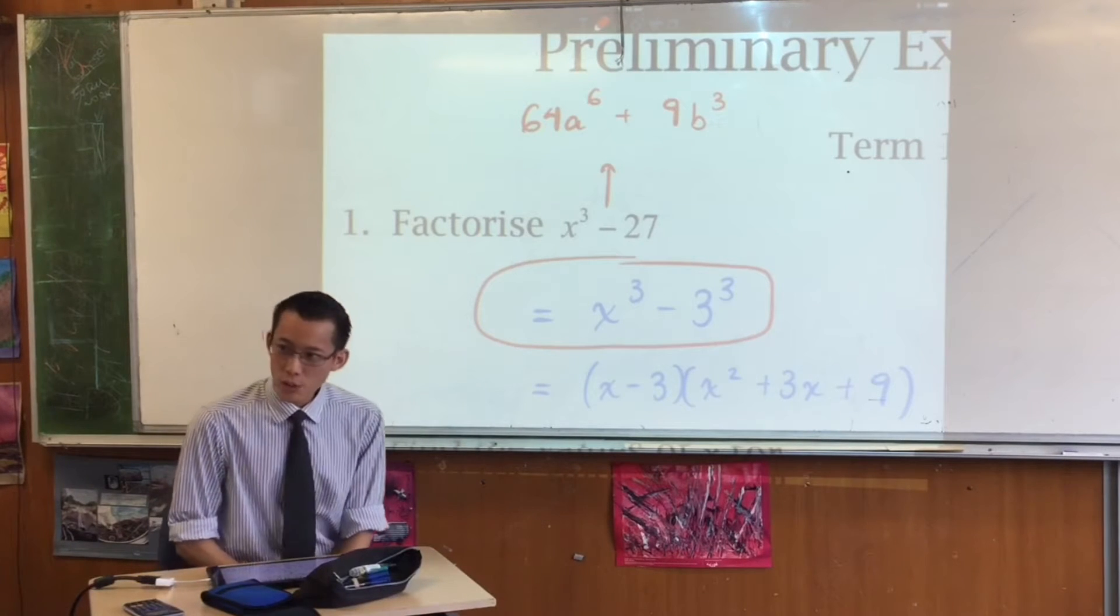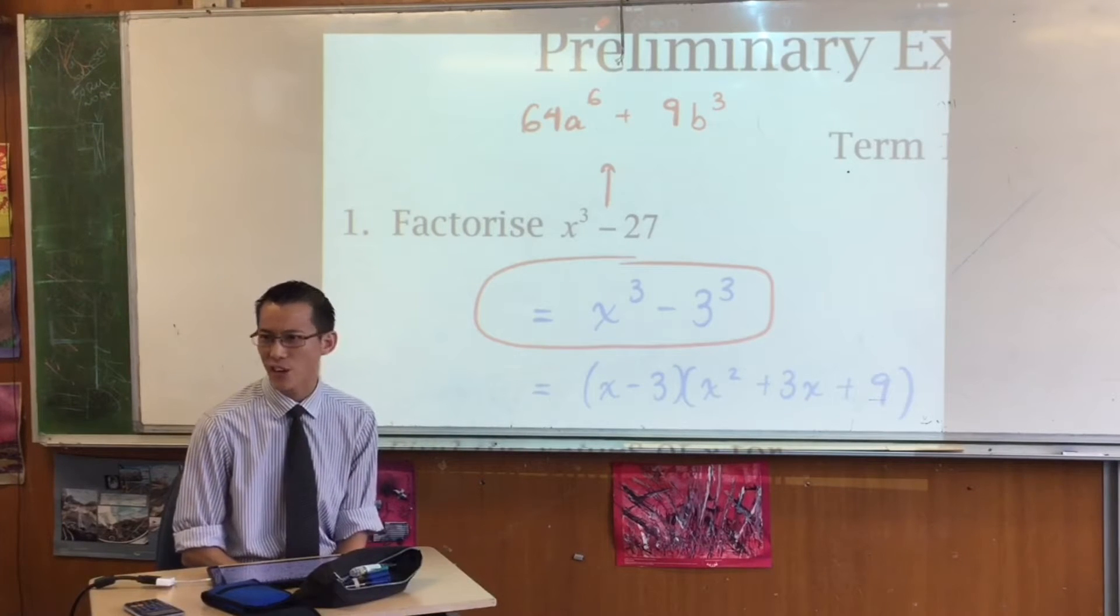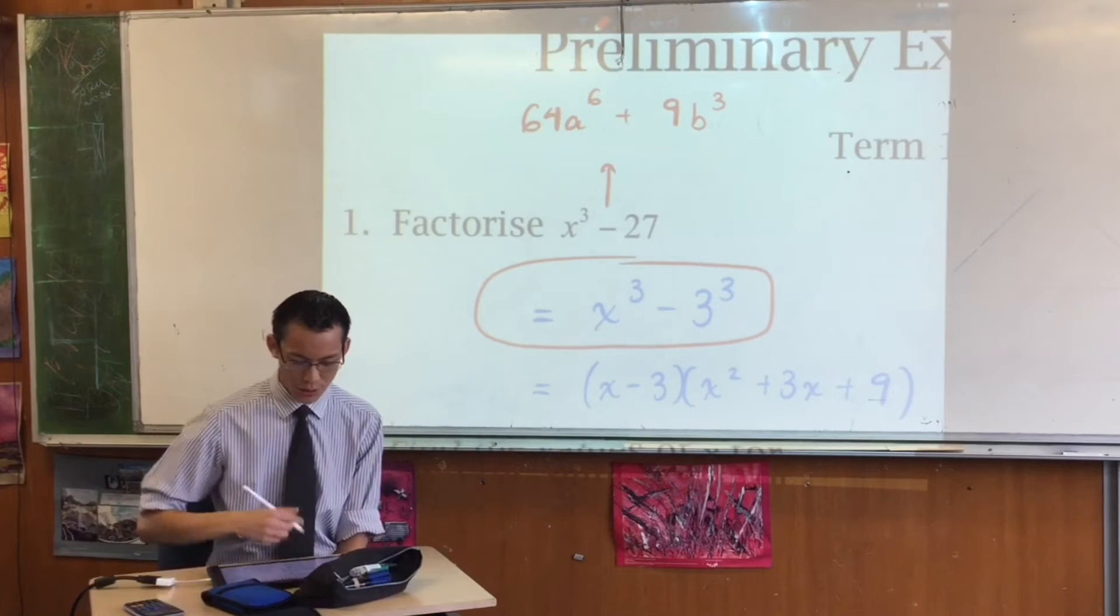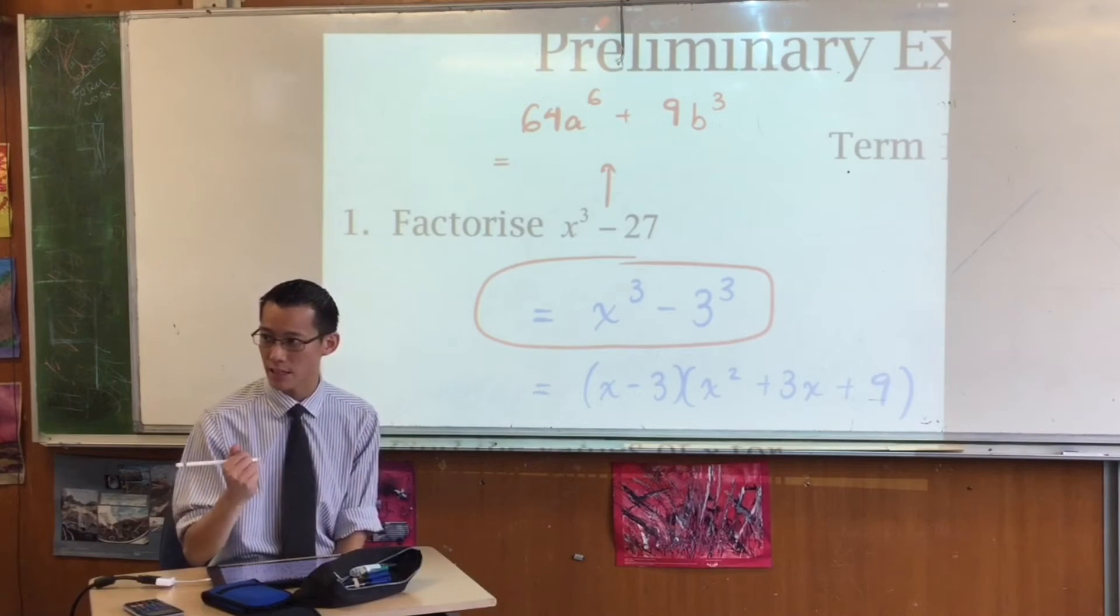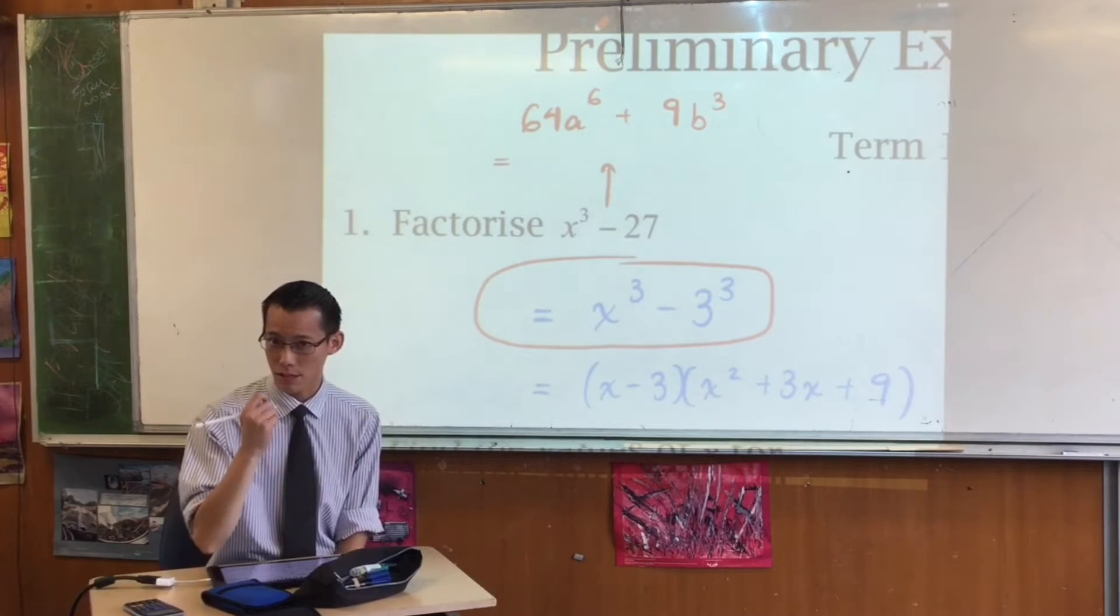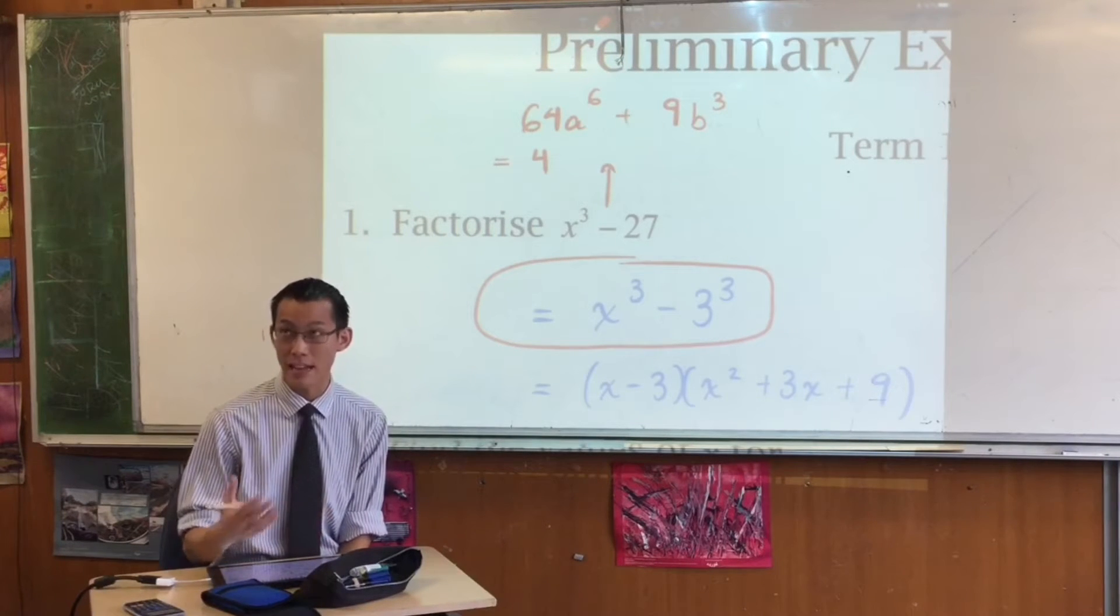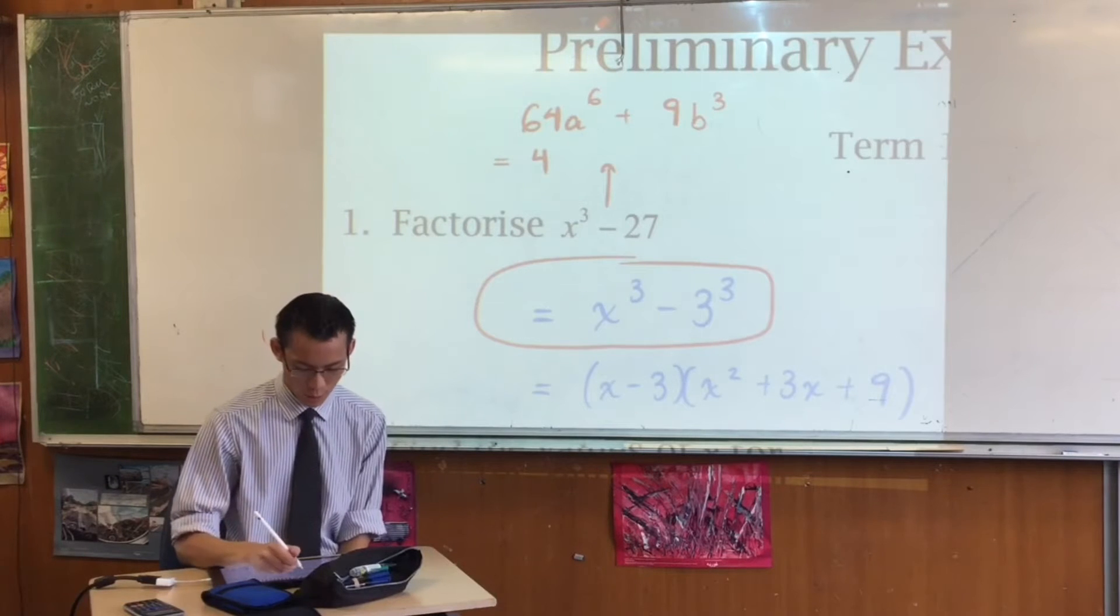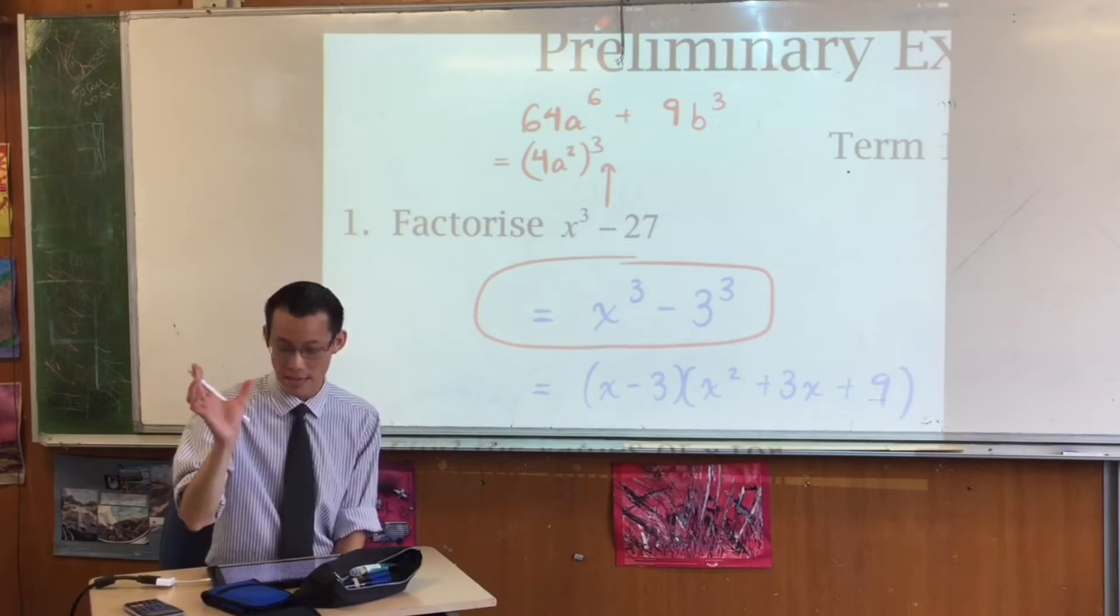So when you look at a question like this, you're like, oh wait, what am I cubing again? I know I've got sums of cubes, okay? So writing the next line, like, what is cubed to get 64? It's 4, right? What's cubed to get a^6? A squared, right? So that thing is cubed. So now you know what's being cubed.